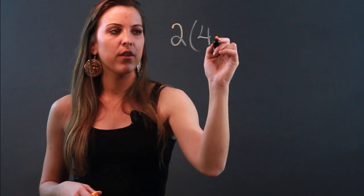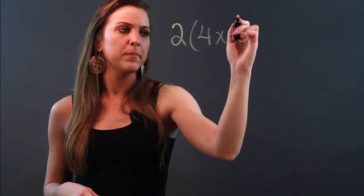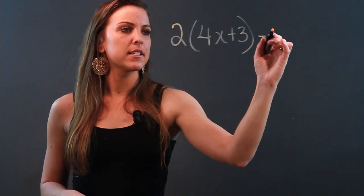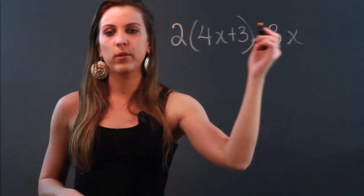So I'm going to give you an expression. Let's say we have 2 times the quantity of 4x plus 3 minus 3x. And I want to simplify this.